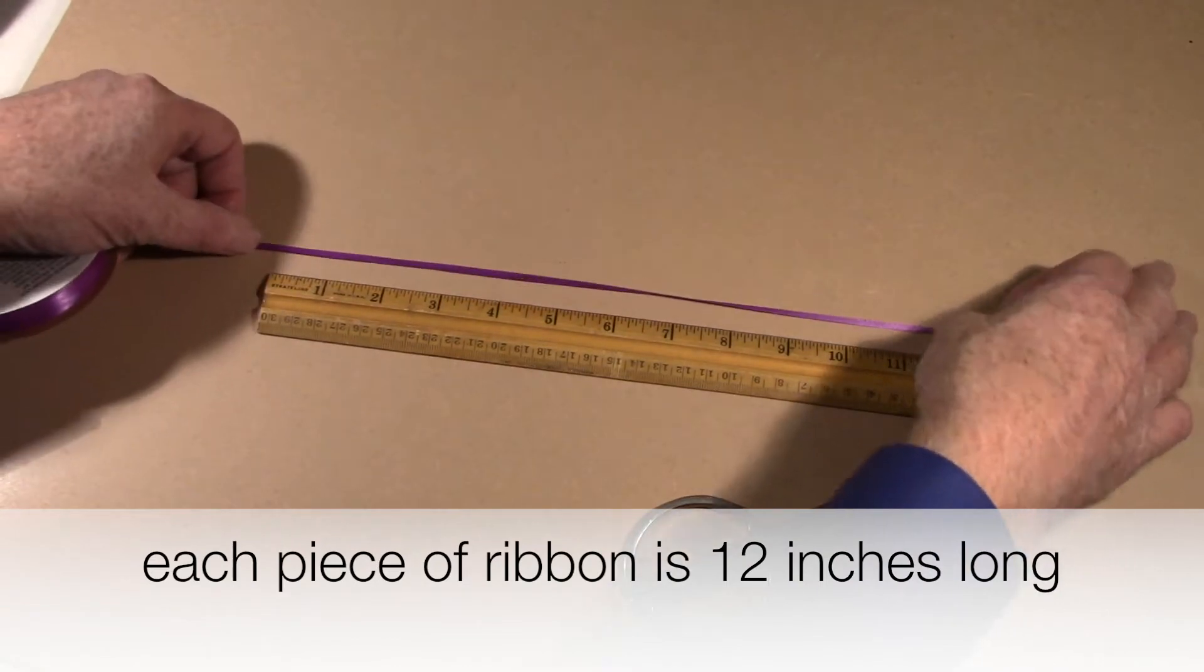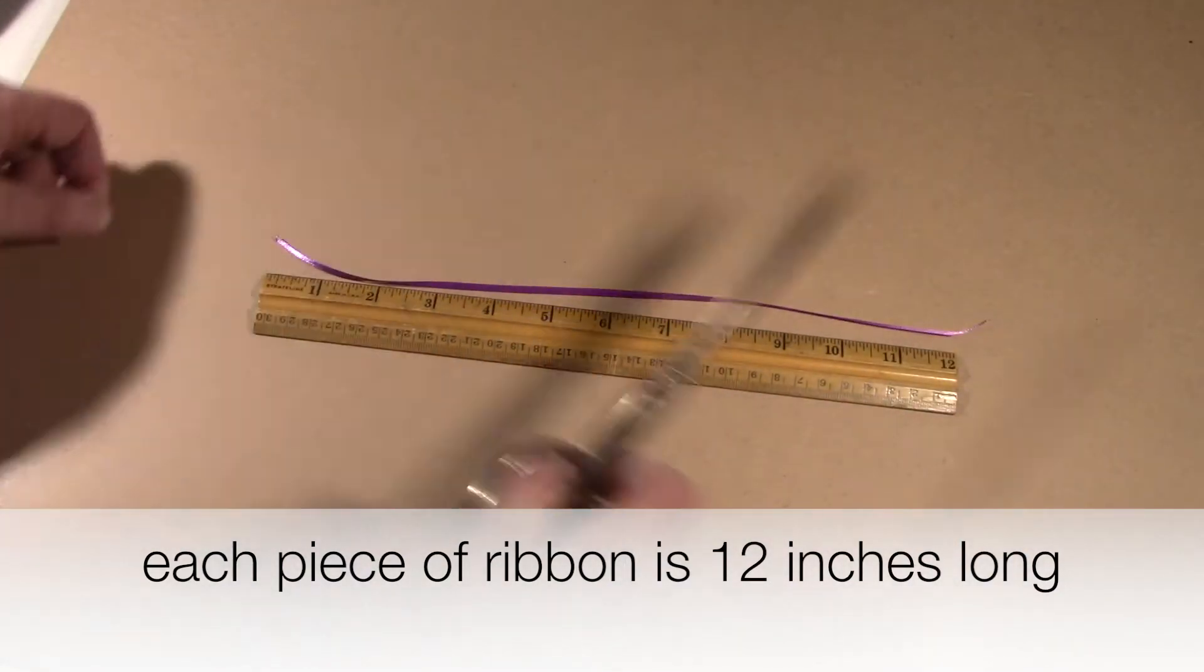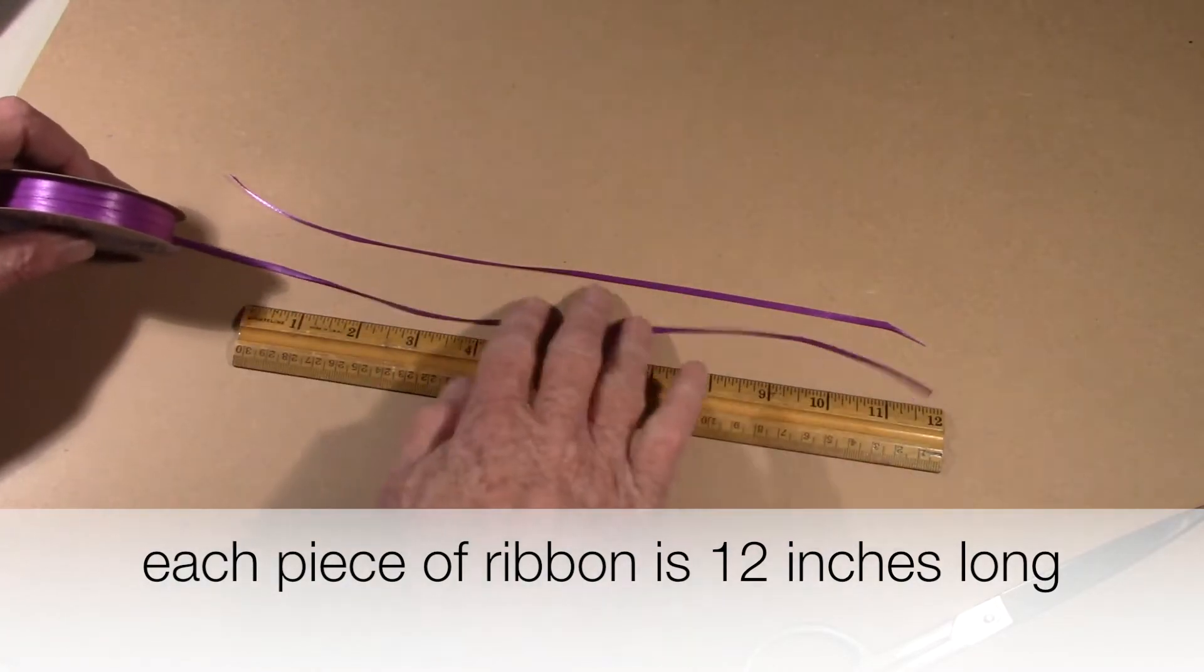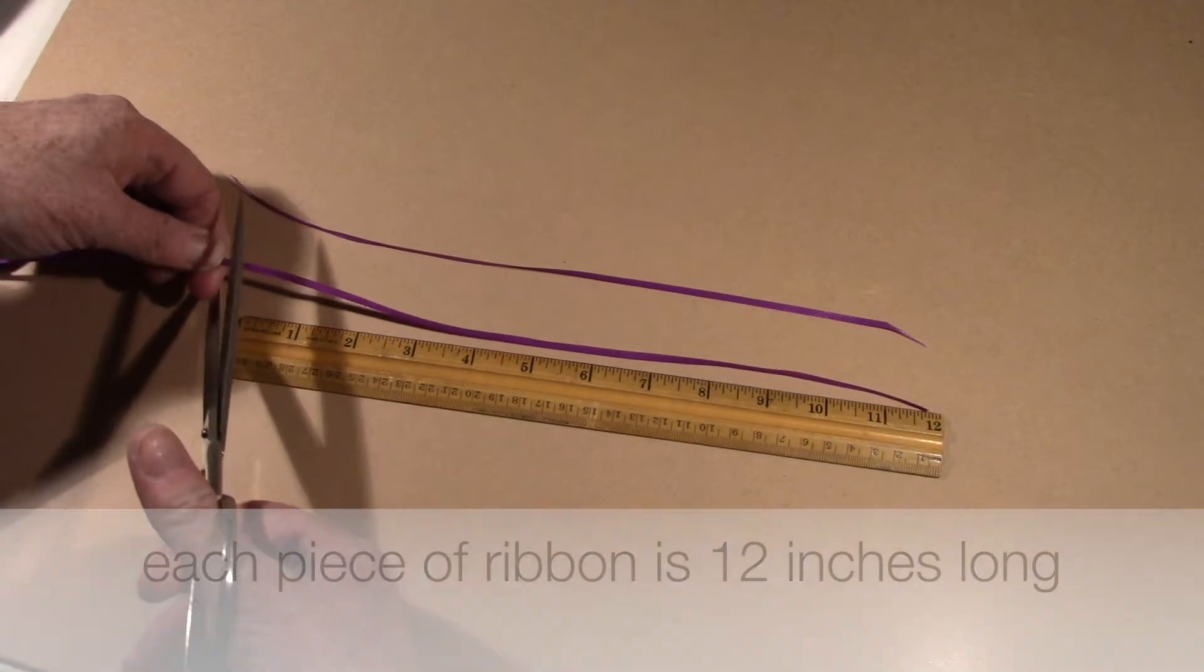Next, we need to cut the ribbons. Now each ribbon should be cut about 12 inches each. Use a ruler for that. You'll need, finally, six of these to complete the parachute.